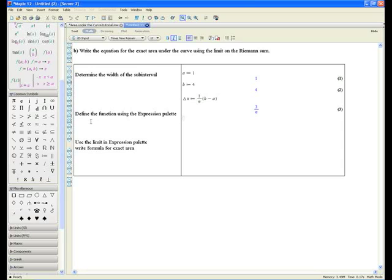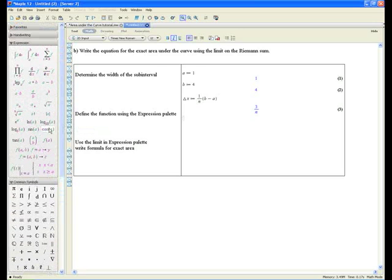The next step is to define the function using the expression palette. Let's scroll up to the expression palette. And here's the definition of the function. When you press tab, you can go to the right. And we want the function to be in terms of x. And we know f at x is equal to x squared. Enter.